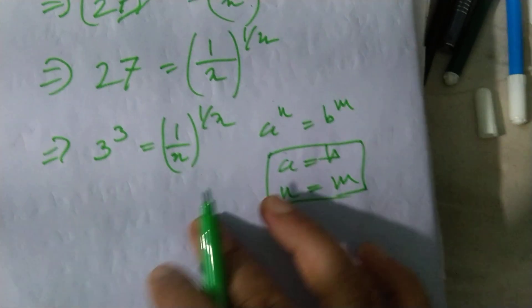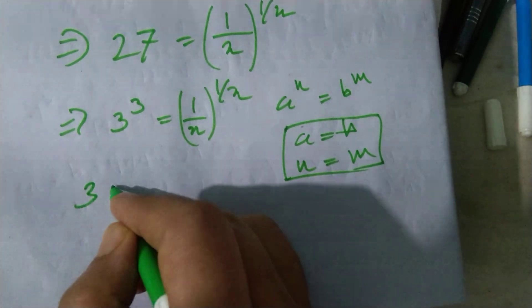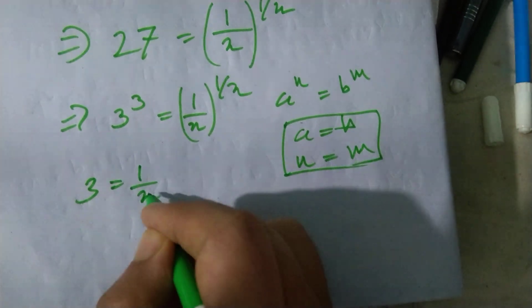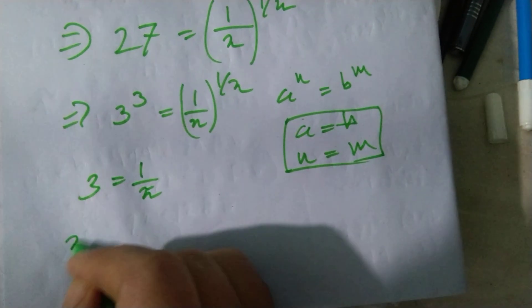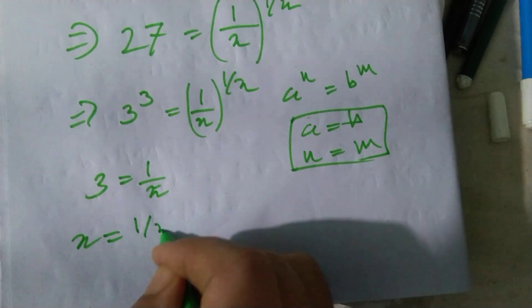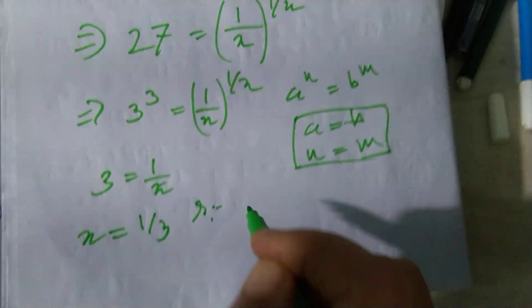If we follow this principle, so 3 equals to 1 by x. So x equal to 1 by 3 is my answer.